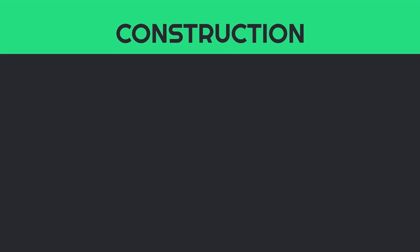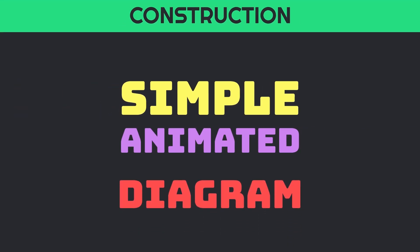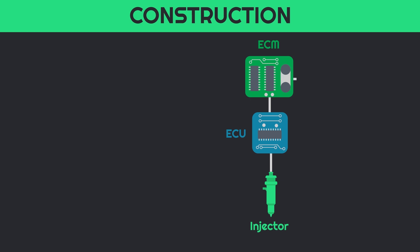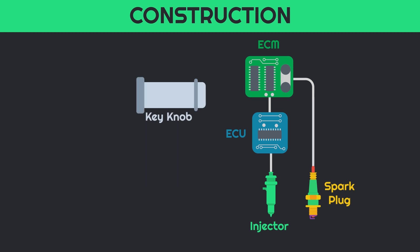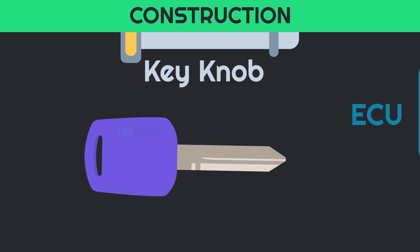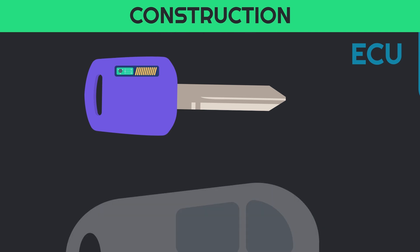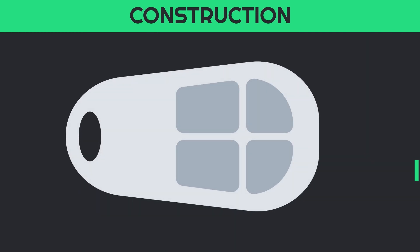An immobilizer is a built-in feature in the ECU of a car, but to understand it easily we use an animated diagram. Normally, the engine management unit and electronic ignition system are connected to and controlled by the ECM. The car key dock contains electromagnetic coils which are also connected to and controlled by the ECU. Inside a standard car key, a transponder chip is hidden inside the plastic cover. This transponder chip contains a copper coil and a hard-coded signal transponder circuit. In the case of keyless entry, the transponder chip is connected with the battery inside the remote.